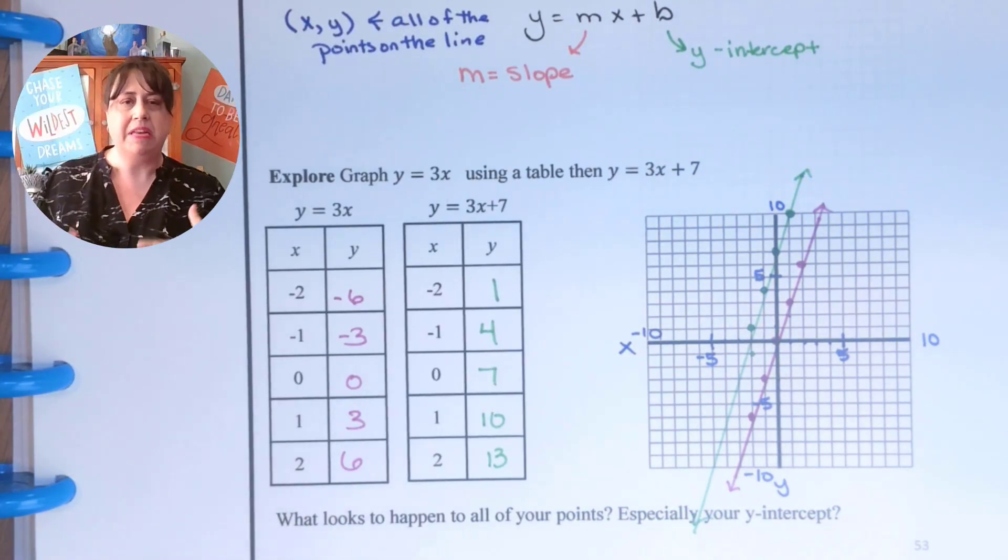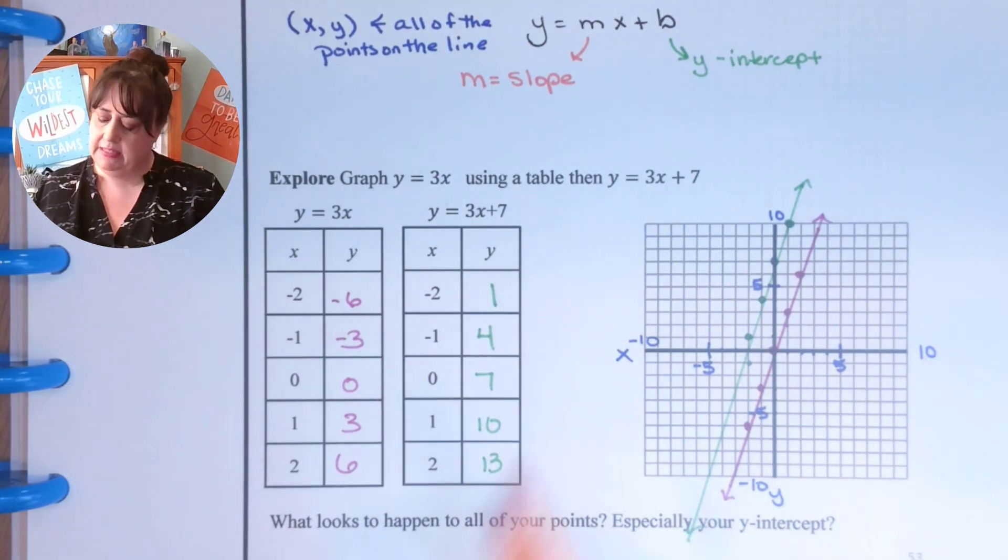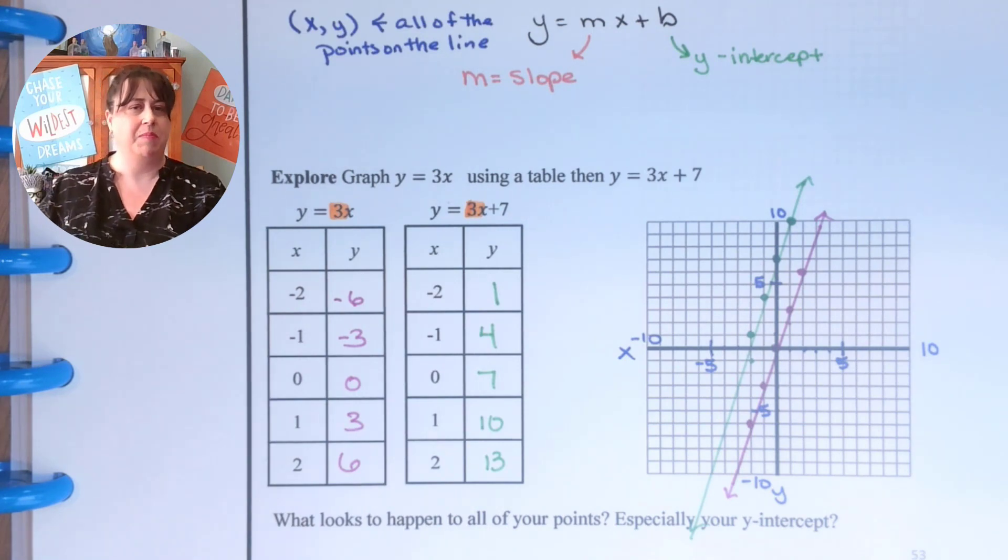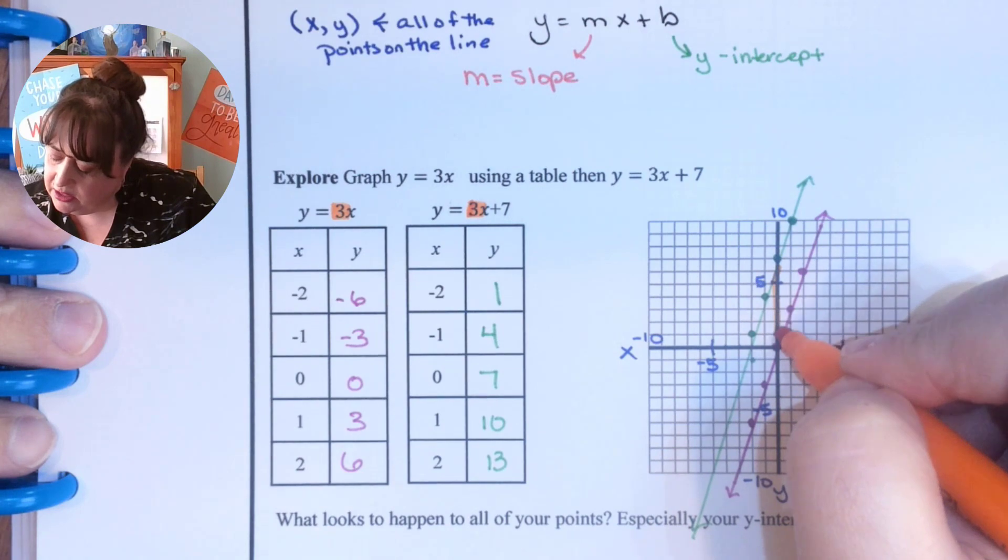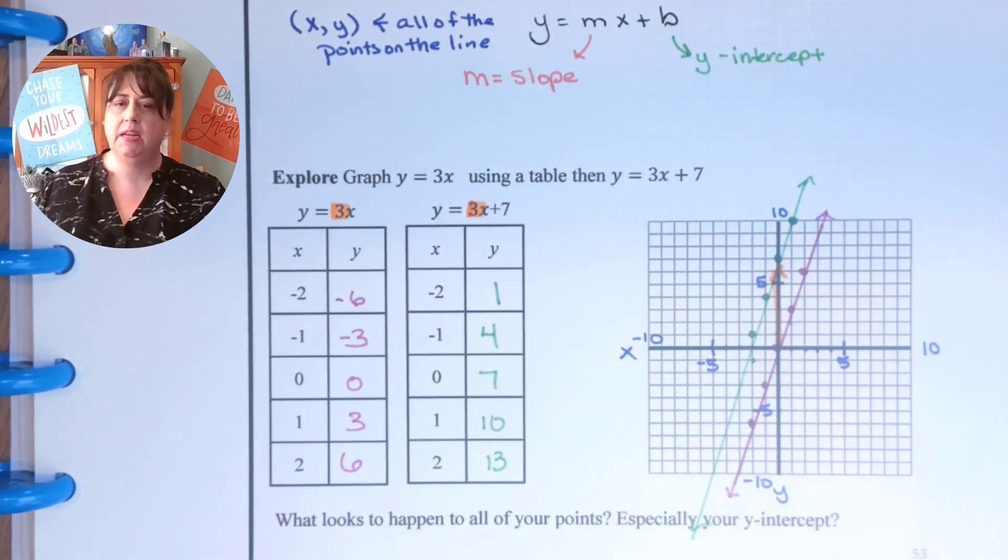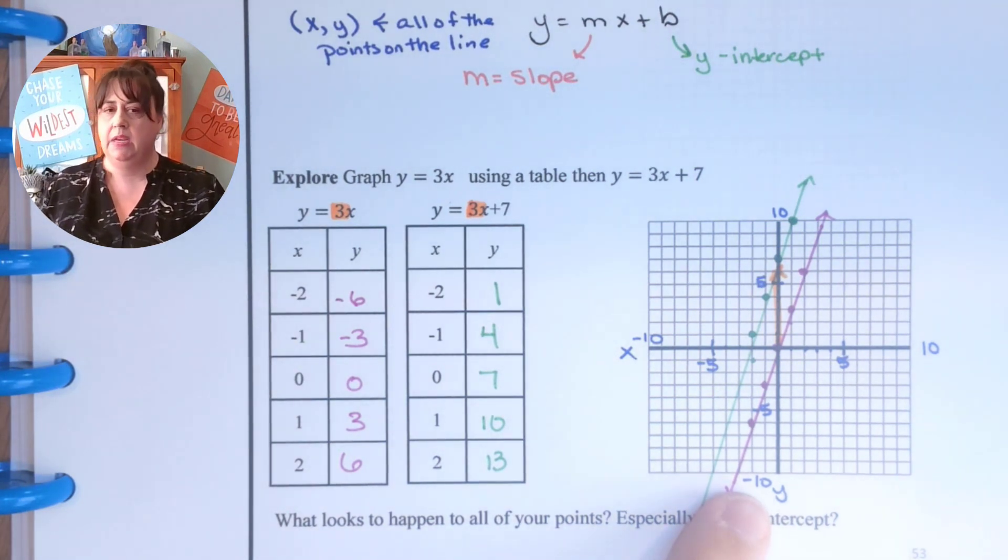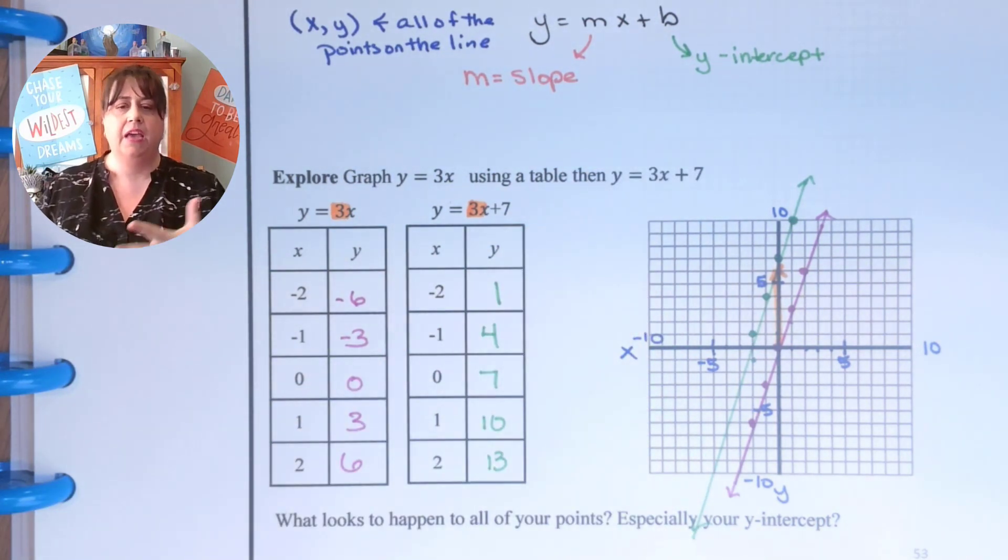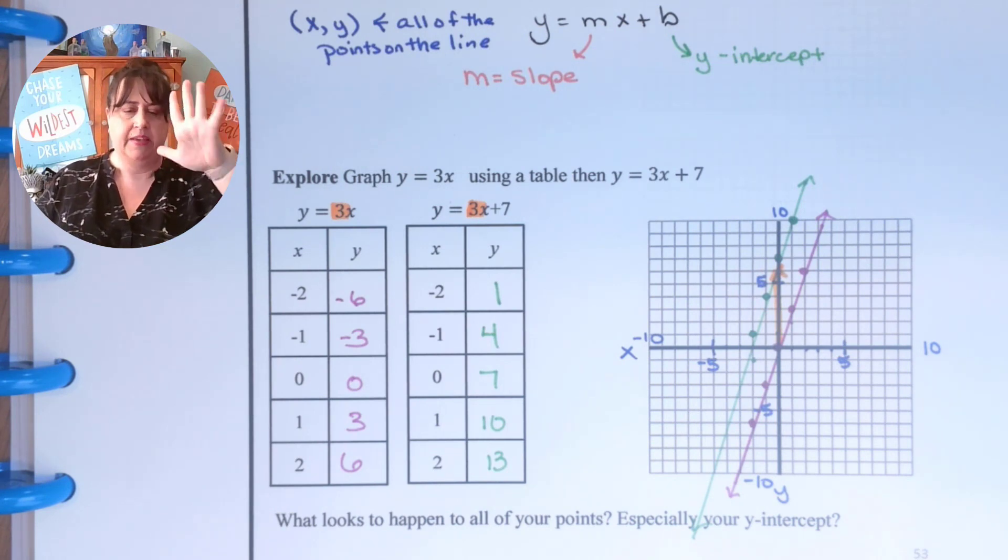So remember when we did slopes, we said hey, when the slopes are the same, the lines are parallel. These are parallel lines. Do you remember that? And we also talked about just shifting things. Look at this. I went from 0 to 7. That's all I did. I just shifted this up 7. So my line which was here, it just went up 7. And so this is the y-intercept. And so I just shifted my whole graph up 7. That was it. Just shifted. Everything went up 7.